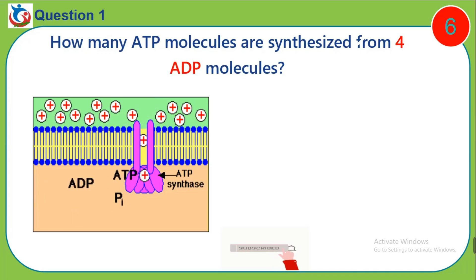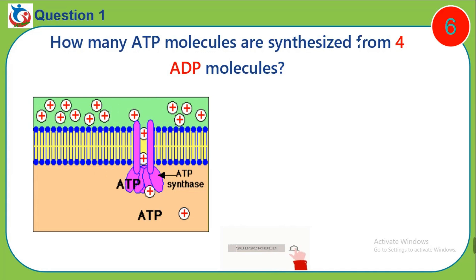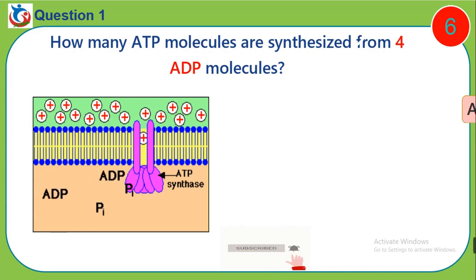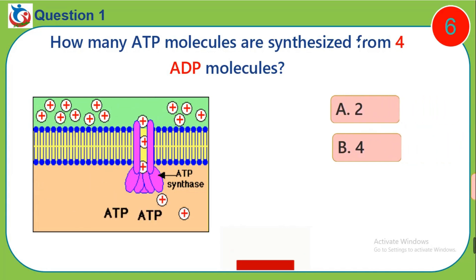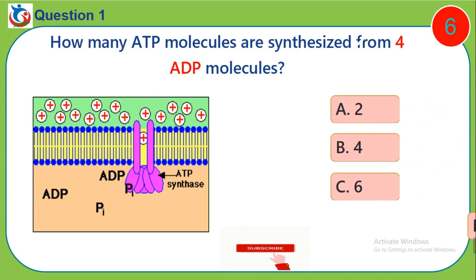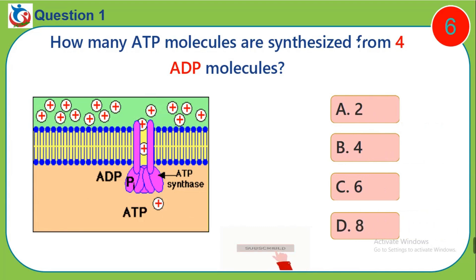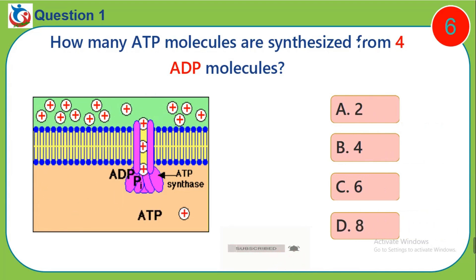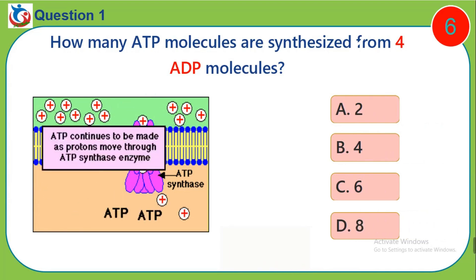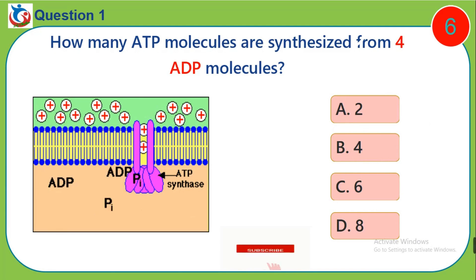Question 1. How many ATP molecules are synthesized from 4 ADP molecules? A, 2. B, 4. C, 6. D, 8.